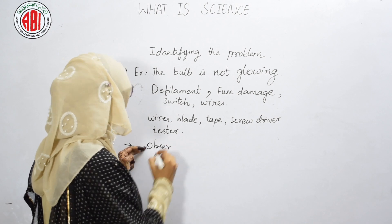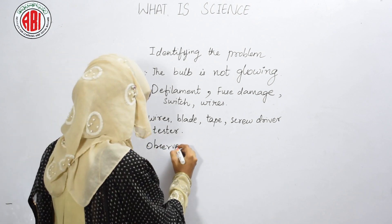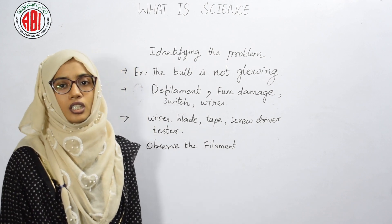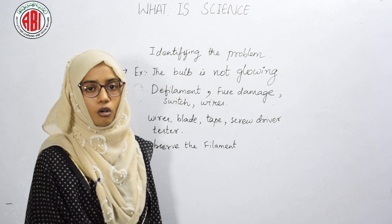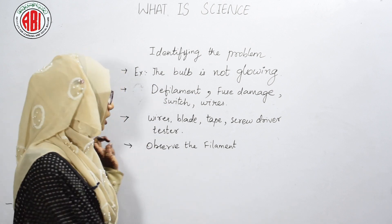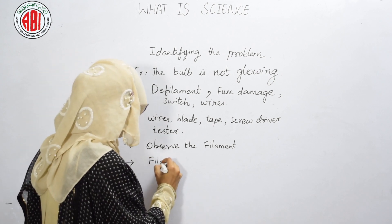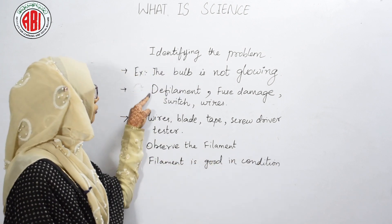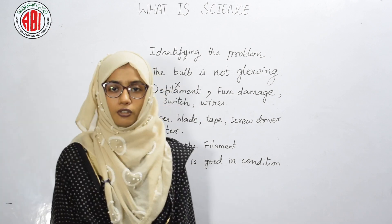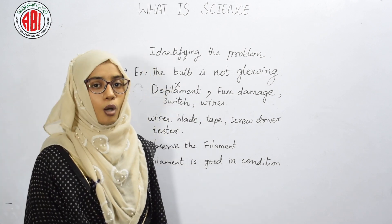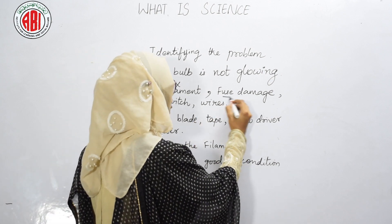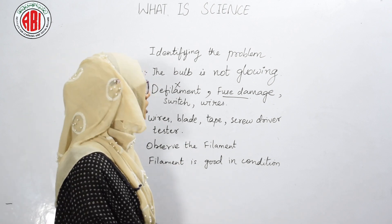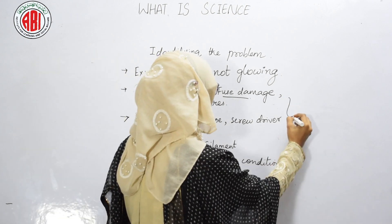To test the first hypothesis, we observe the filament. After observing the filament, we need to conclude whether it is the cause of the bulb not glowing. After observation, we found that the filament is in good condition, so our first hypothesis is incorrect. If the hypothesis is incorrect, we pose a new hypothesis — we will now check whether the fuse is damaged.